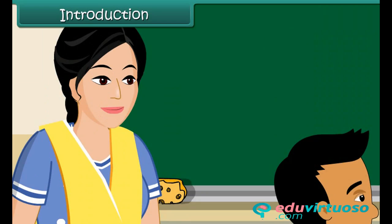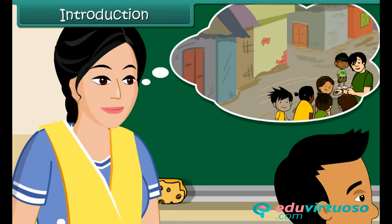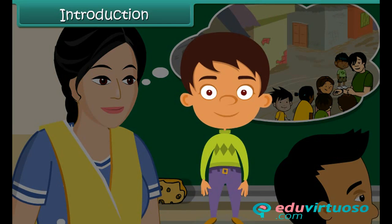Ramesh's mother knows the reason for his absence. They live in a slum area, and Ramesh falls ill frequently because of his unhealthy surroundings. However, Ramesh's mother cannot understand how she can improve their surroundings. Let us understand how we can keep our surroundings and ourselves clean.